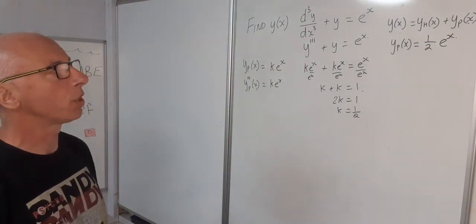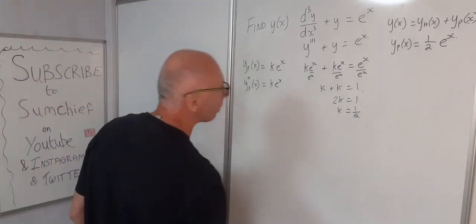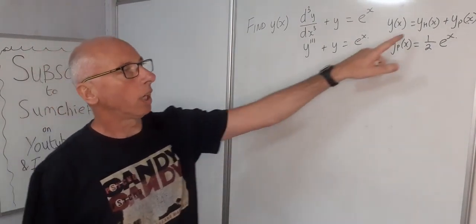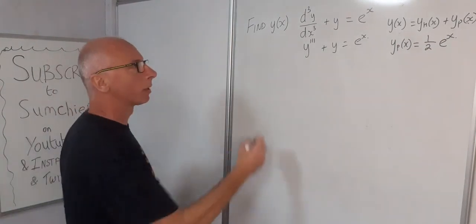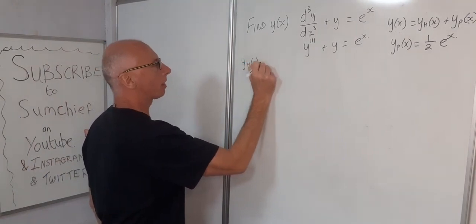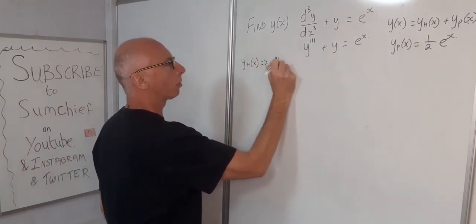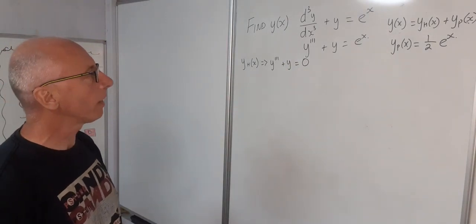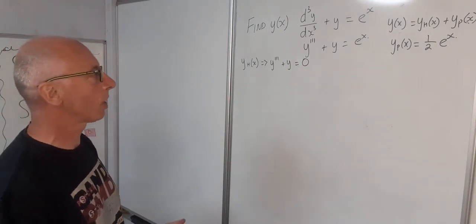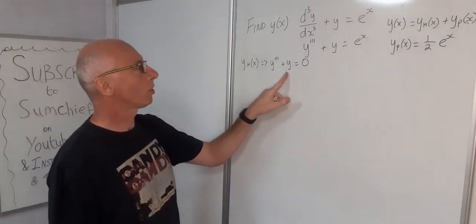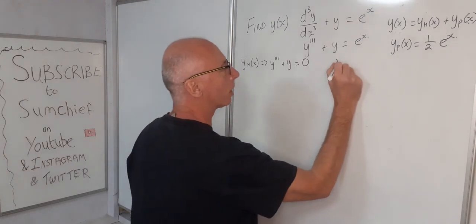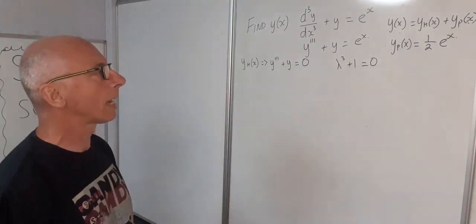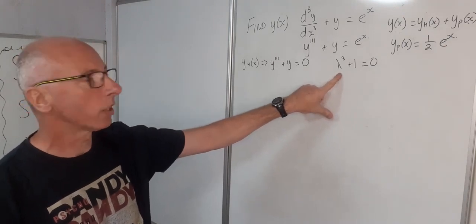Now we're going to look for our homogeneous solution. Let's find our homogeneous function for our general solution. We set the right-hand side to zero, so y_h of x leads us to y triple prime plus y equals zero. Even though it's a third order linear differential equation, it's normal business — we need to find the auxiliary equation. So that gives us λ³ + 1 = 0, and since λ is cubed we're going to have three solutions.